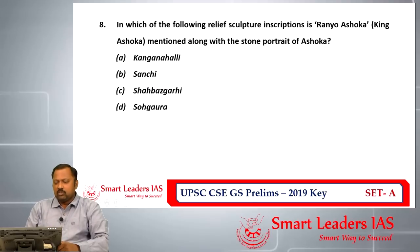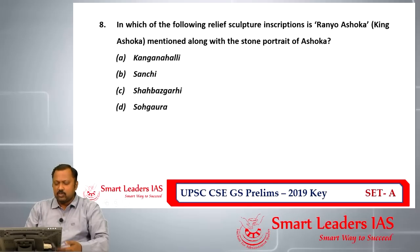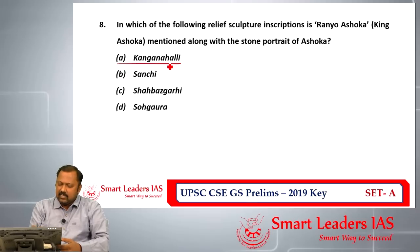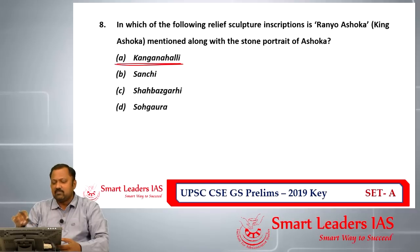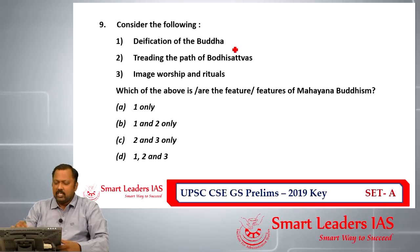Question number eight asks in which relief sculpture or inscription is 'Raipur Ashoka' — that is, King Ashoka — mentioned along with a stone portrait of Ashoka. This is found at Kanaganahalli, where a portrait of Ashoka is depicted and mentioned. You may find this in NCERT or other textbooks. The answer for question number eight is A.